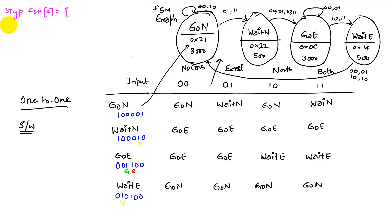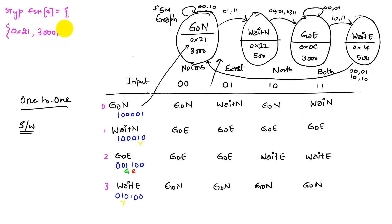The output for the first state (go north, index 0) corresponds to 0x21. The delay is 3,000. Then we list the next states for each input: on input 00, go to go north; on input 01, go to wait north; on input 10, go to go north; on input 11, go to wait north. Notice the similarity between the table and the line in the software — it's the same thing.